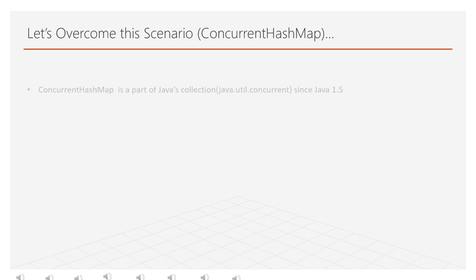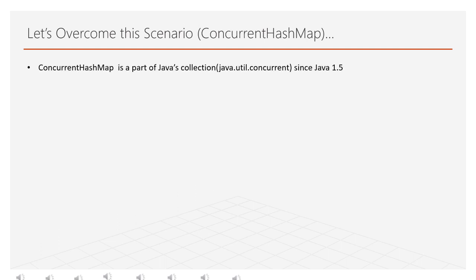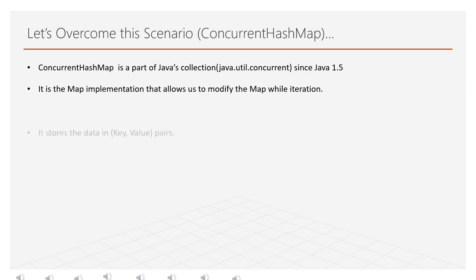ConcurrentHashMap is a part of Java's collection — java.util.concurrent — since Java 1.5. It is a map implementation that allows us to modify the map while iterating. It stores the data in key-value pairs.